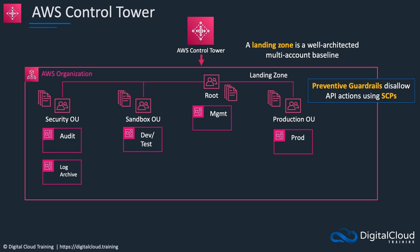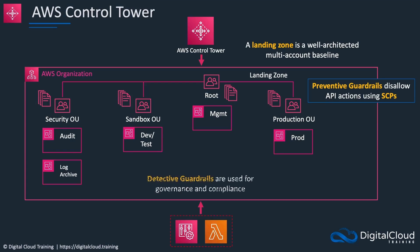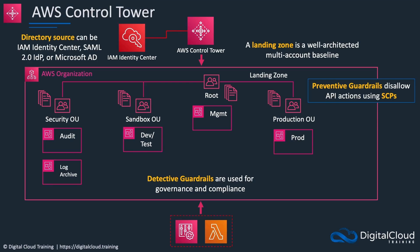The SCPs are attached at the different organizational unit levels. We then have something called detective guardrails, which are used for governance and compliance, and we have integration with Identity Center as well. The directory sources can be Identity Center, a SAML 2.0 identity provider, or Microsoft Active Directory. So we have single sign-on capability integrating into Control Tower, which leverages Organizations for creating this landing zone with a well-architected baseline of accounts, organizational units, preventive guardrails, and detective guardrails.